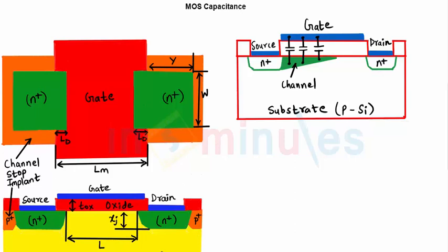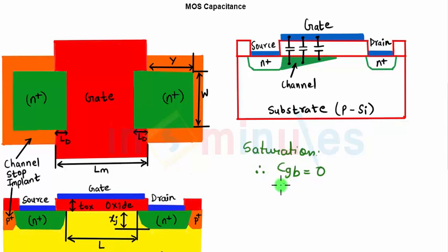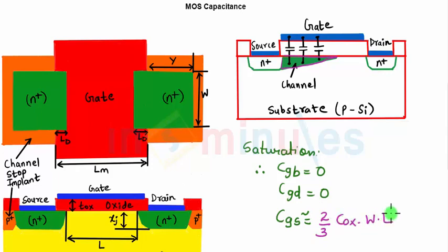In the saturation region, the channel has pinched off. The remaining channel still shields the gate from the substrate, so CGB equals zero. Because the channel is no longer connected to the drain, CGD is also zero. The only significant capacitance is CGS, which for the trapezoidal-shaped pinched-off channel works out to approximately two-thirds of COX times W times L.